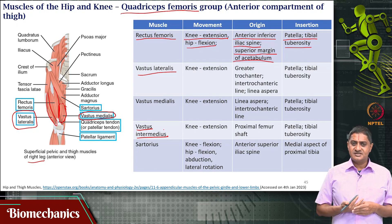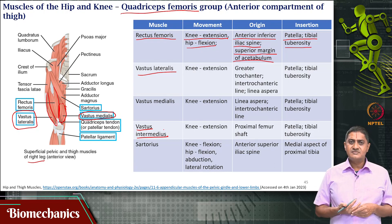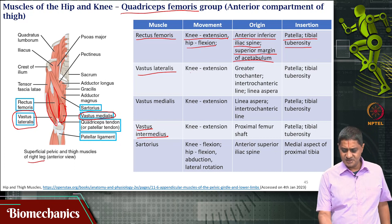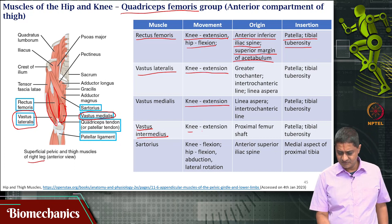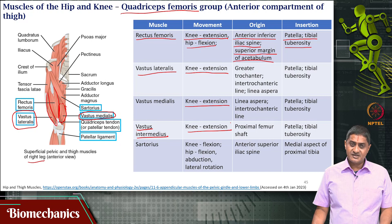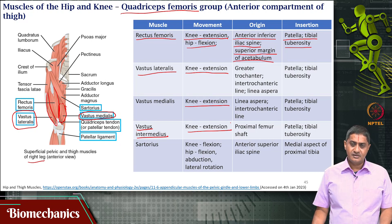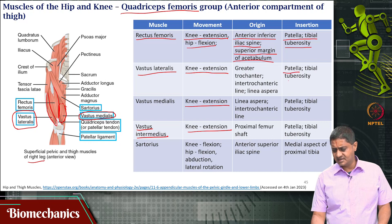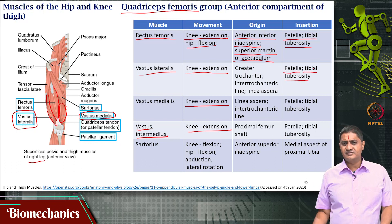All four muscles together perform approximately the same function, which is knee extension — they are all responsible for knee extension. Their origins are different; for example, vastus lateralis originates at the greater trochanter and intertochanteric line. Their insertions are all the same — they all insert on the patella, which then continues on as the patellar ligament and attaches at the tibial tuberosity.